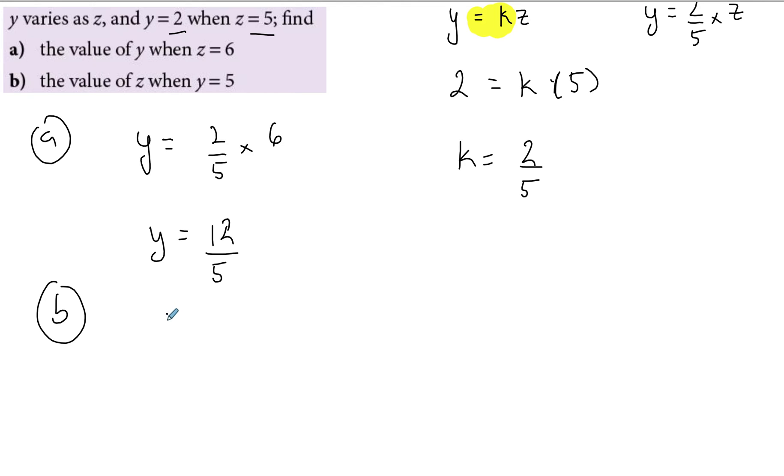For the second part, you need to find z this time, and y is equal to 5. So 5 equals 2 over 5 z, and then you solve this. If I move this whole thing to the other side, it's going to reciprocate, so I'm going to get 5 times 5 over 2 equals z. And this will give me 25 over 2. And again, you can leave it as it is, or as a mixed number, or as a decimal.